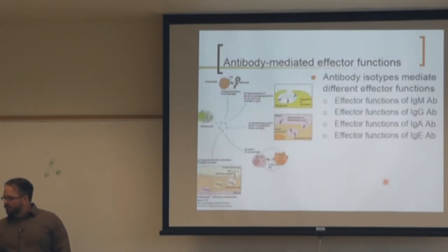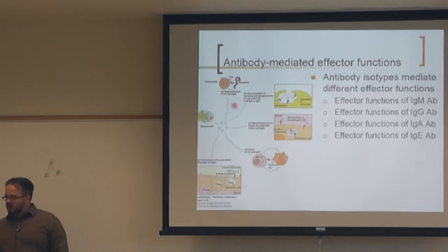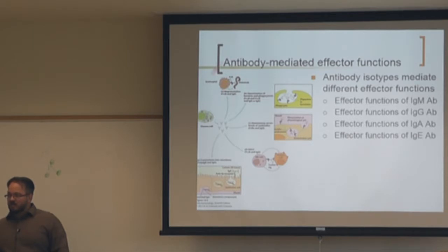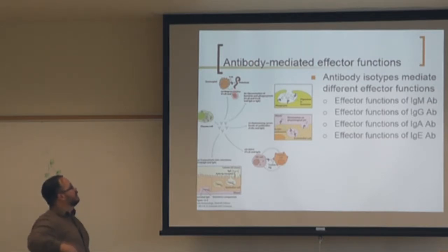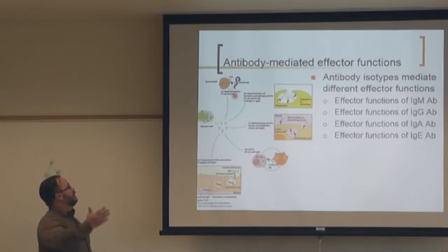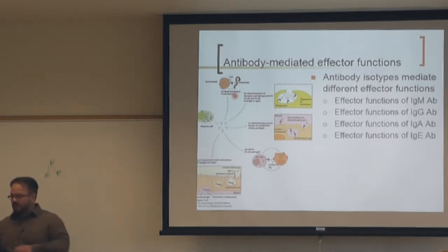FC receptor binding can cause degranulation. For example, eosinophils won't engulf a large helminth, but binding through the FC receptor triggers degranulation, creating a very hostile environment for the worm. This is triggered through the FC receptor binding to antibodies bound to that worm. These responses are driven by IgE.